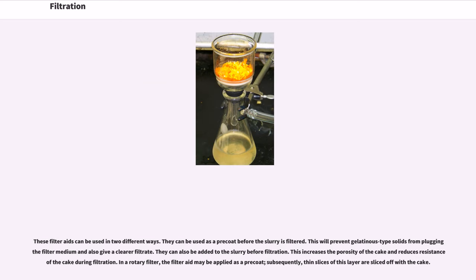These filter aids can be used in two different ways. They can be used as a pre-coat before the slurry is filtered. This will prevent gelatinous type solids from plugging the filter medium and also give a clearer filtrate. They can also be added to the slurry before filtration. This increases the porosity of the cake and reduces resistance of the cake during filtration.